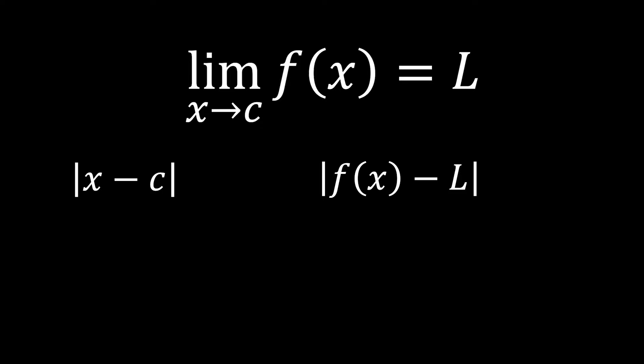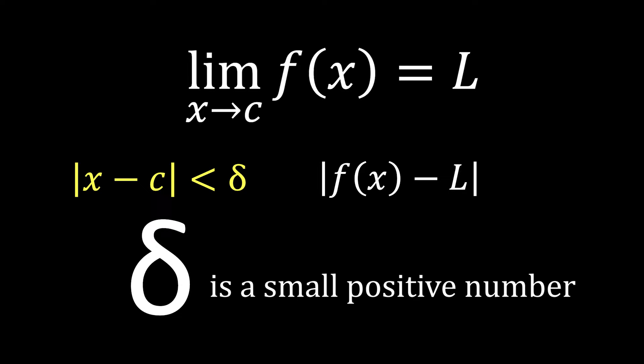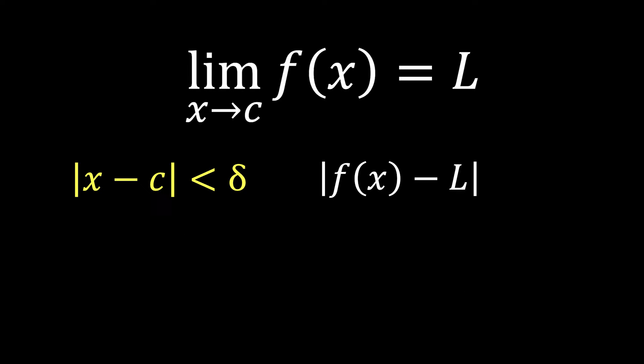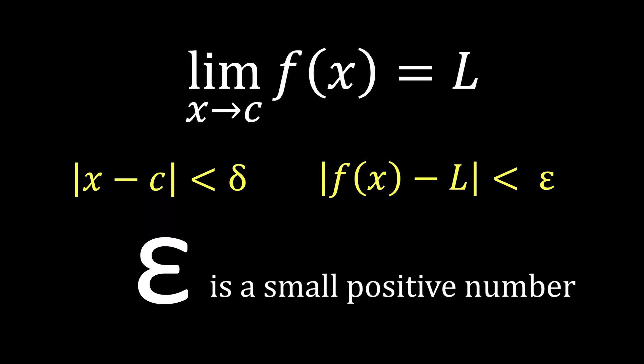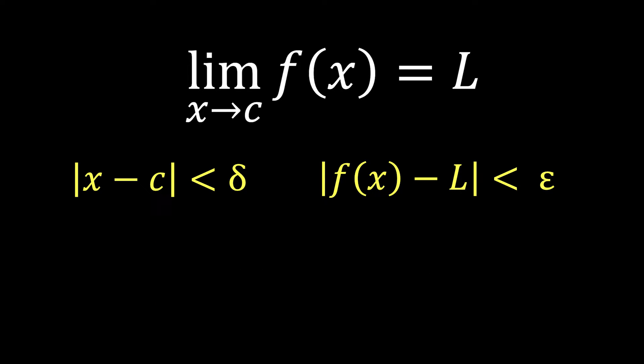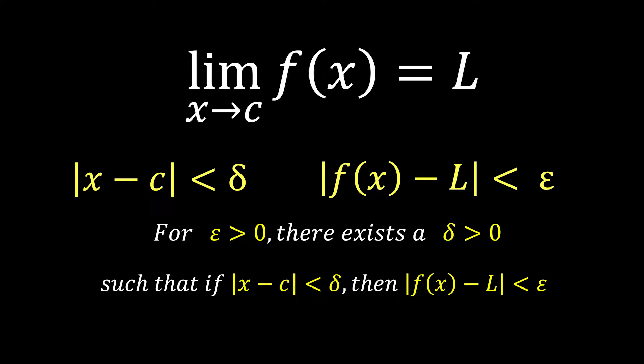The expression |x-c| < δ represents that the distance between x and c is less than δ, where δ is a small positive number. Similarly, the expression |f(x)-L| < ε represents that the difference between f(x) and L is less than ε, where ε is a small positive number. Now, using for all positive ε, there exists a positive δ such that if |x-c| < δ then |f(x)-L| < ε, we can attempt to define the limit.